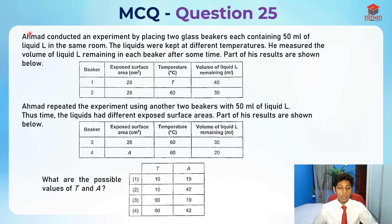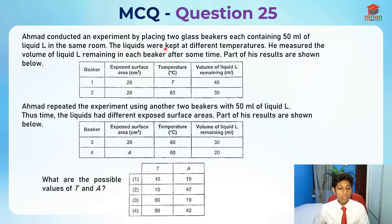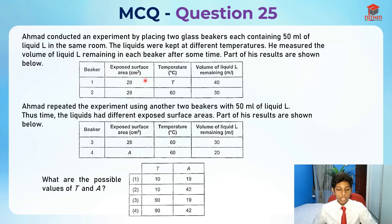Let's read question 25 first. Ahmad conducted an experiment by placing two glass beakers, each containing 50 ml of liquid L, in the same room. The liquids were kept at different temperatures. He measured the volume of liquid L remaining in each beaker after some time. Beaker 1 has an exposed surface area of 28 cm² and temperature T, with a volume of liquid L remaining of 40. Beaker 2 has an exposed surface area of 28 and temperature 60, with a lesser volume remaining.